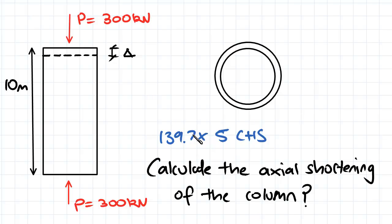So firstly, what does CHS mean? That means circular hollow section. And the 139.7, that's the diameter of the section, 139.7. And the 5, that is the thickness 5 of our cross section.